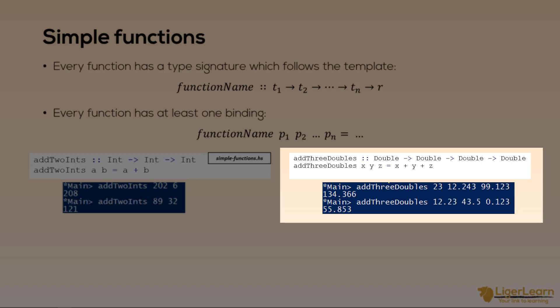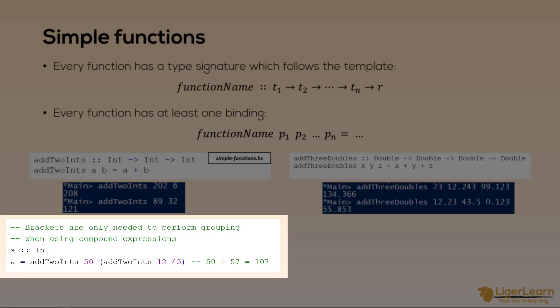A quick note on brackets they're only needed when you need to perform grouping in a compound expression or to remove ambiguity. So for example here we are calling the function add two ints and passing the first parameter of 50. However the second parameter we want to parse in is the result of calling add two ints again. And so we group that call to add two ints in brackets. So there is no confusion. If we did not provide the brackets the compiler would throw an error because it would think you are applying the function to four arguments instead of two.